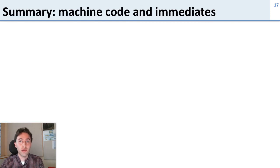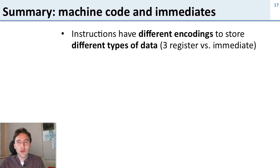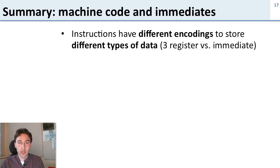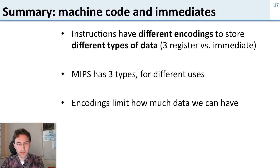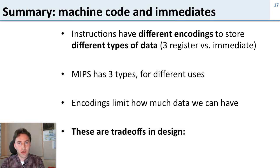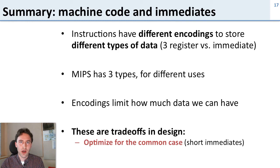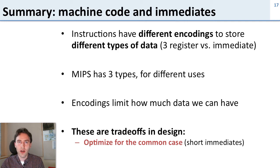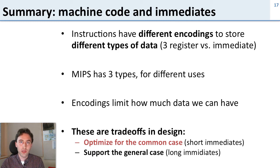To summarize machine code and immediates: we have different instruction encodings to store different types of data — three registers, two registers and an immediate, or just one immediate — and MIPS has three types with different uses. The different encodings limit how much data we can store, and this is all a trade-off in design. MIPS optimizes for the common case: most branches are short so 16 bits makes sense, and most immediates are small and fit in 16 bits. But we also support the general case — using two instructions to load a large constant, or a different jump instruction for very far jumps.